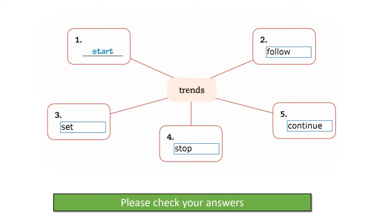Here are your answers. Please check your answers. Number two: follow trends. Number three: set trends. Number four: stop trends. And number five: continue trends. These are the verbs that go with 'trend'. This is the noun and verb collocation for 'trend'.